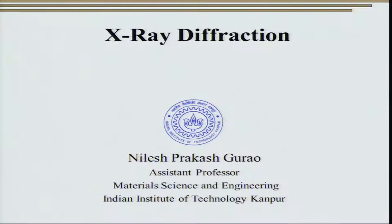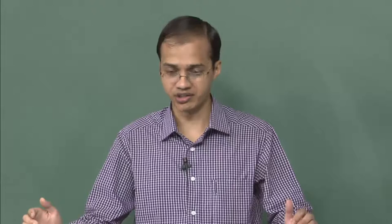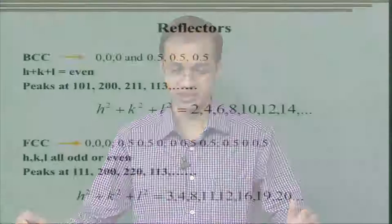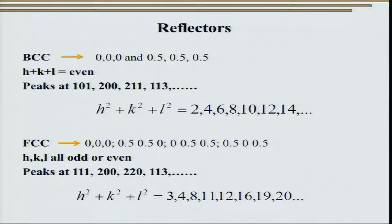Hello everyone, welcome to the second class on the advanced characterization techniques module comprising X-ray diffraction. In the last class, we had understood how X-rays can be used to study the structure of materials and what exactly constitutes diffraction. We had ended up calculating the reflection condition for various crystalline structures and found that for BCC the condition is H+K+L even, and for FCC we need H, K, L all even or odd. In the present lecture, we are going to focus on different experimental techniques for doing X-ray diffraction.